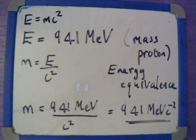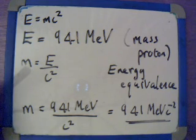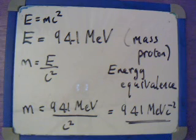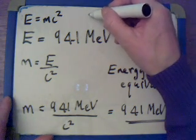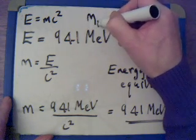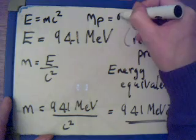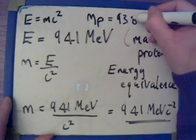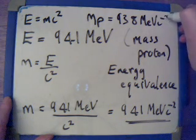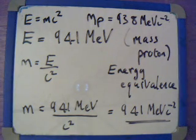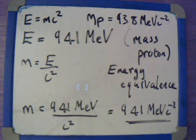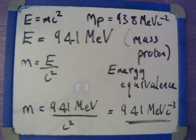So what were we trying to do? We were trying to find out where we got our value from the data booklets. Now, this is not exactly the same — because in our data booklets we had the rest mass of a proton as 938 mega electron volts C to the minus 2, whereas we calculated 941. Why are they not the same? I'm not entirely sure — it could be due to rounding errors or the data in the booklets — but they're close enough. If you do know why they're different, write to me and I'll mention it on one of my videos.